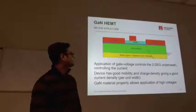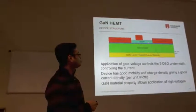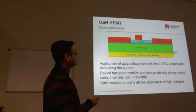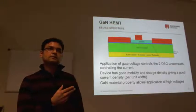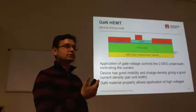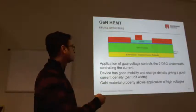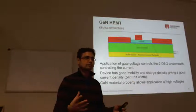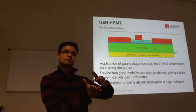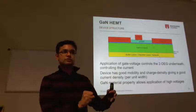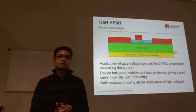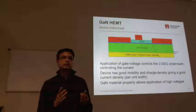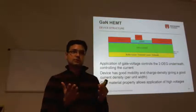We talked about how 2DEG is found and how important the thickness of the aluminum gallium nitride layer is, because thickness decides the interface quality and also the charge density in the quantum well. But once that is set - once you have decided on your process and figured out that for this thickness you get good quality and a reasonable 2DEG charge - that is what device manufacturers will do. They will experiment to find what AlGaN thickness works for them.